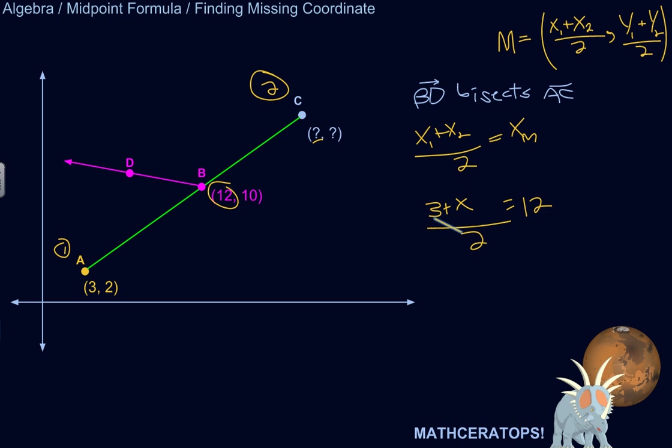At this point, we can just do straight algebra. We want to get x by itself. All this is being divided by 2, so let's multiply both sides by 2 to undo that. So 3 plus x equals 24.